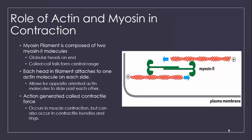This buffer allows for the oppositely oriented actin molecules to slide past each other, creating a contractile force. While this contractile force is generally thought of as only occurring in muscle cells, it can also occur in contractile bundles and rings in non-muscle cells. These bundles and rings aid in cell division.